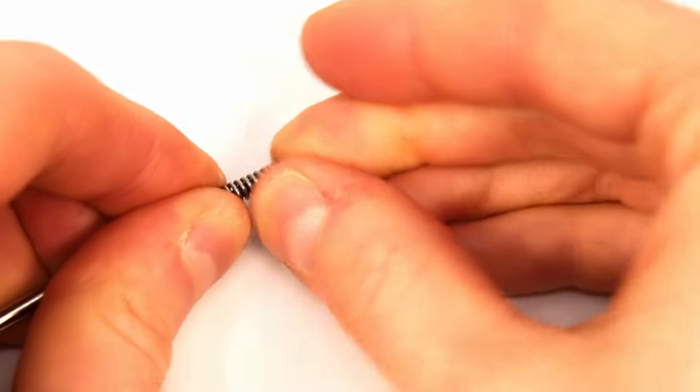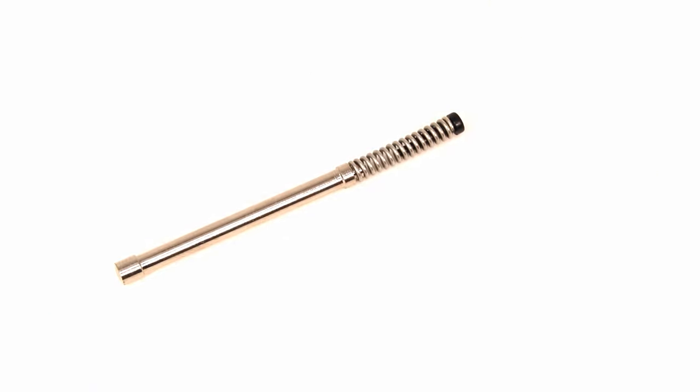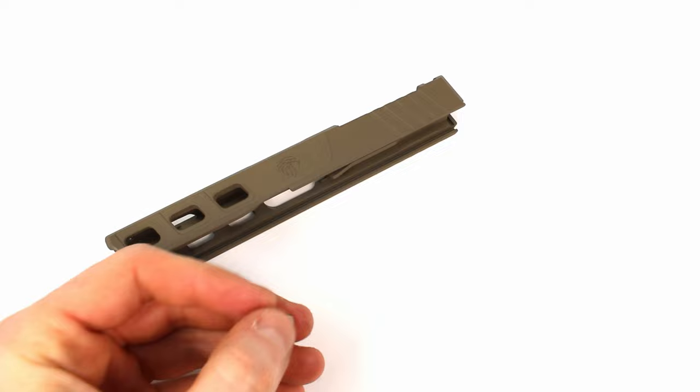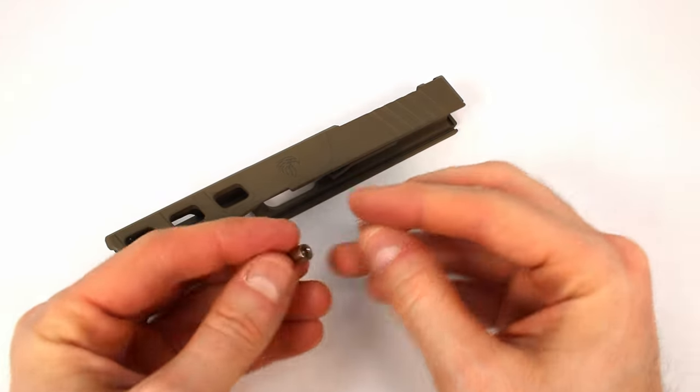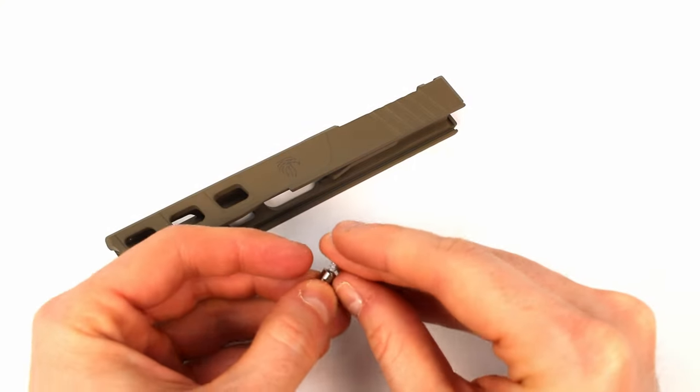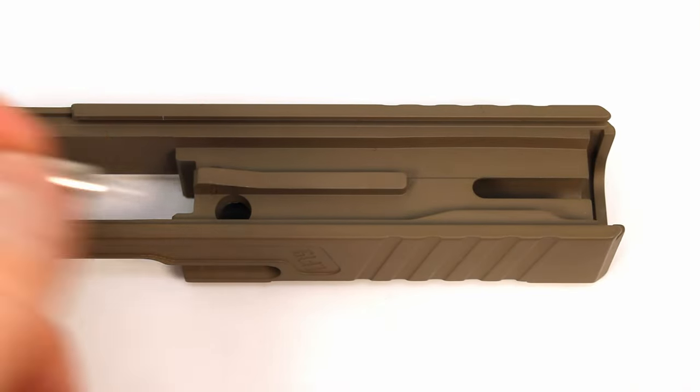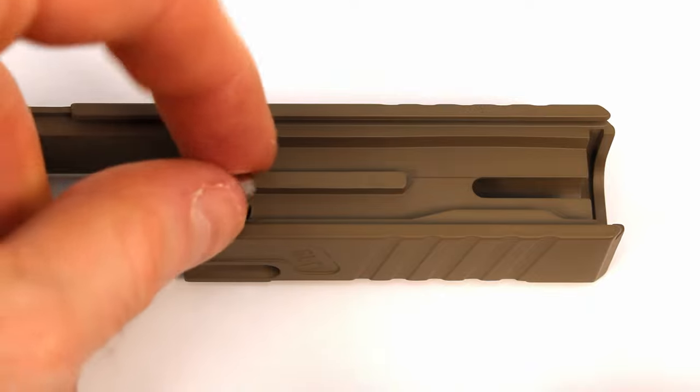Now with that out of the way, we can actually start to put the slide together. We're going to start with the firing pin safety. Go ahead and grab that, grab this little spring here that's going to insert in the end of the firing pin safety and press it in like so. On this hole right here in the slide, that's where we're going to throw the safety and spring first. Just go ahead and line it up, insert it all the way, and then using your finger, just push down on the safety as much as you can.